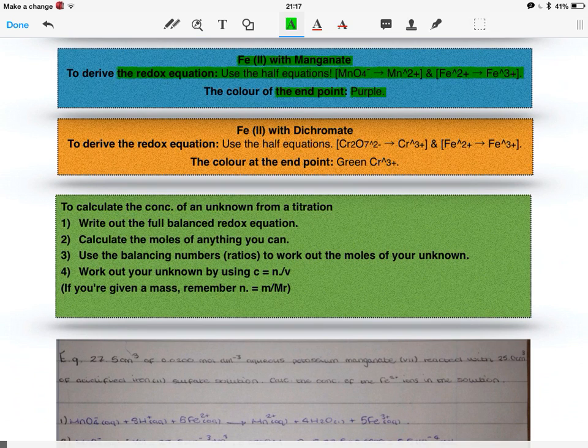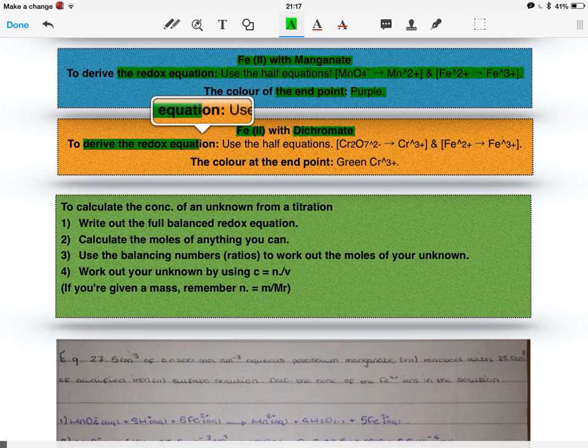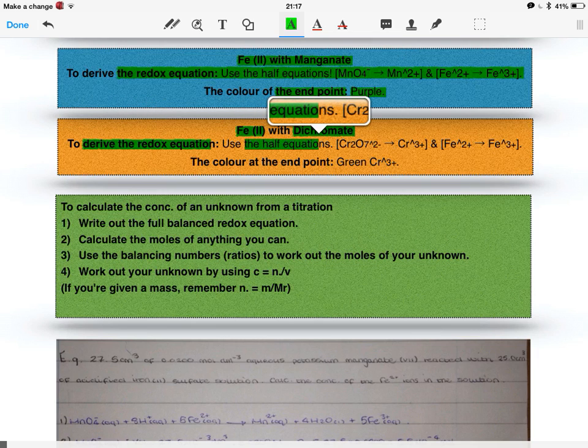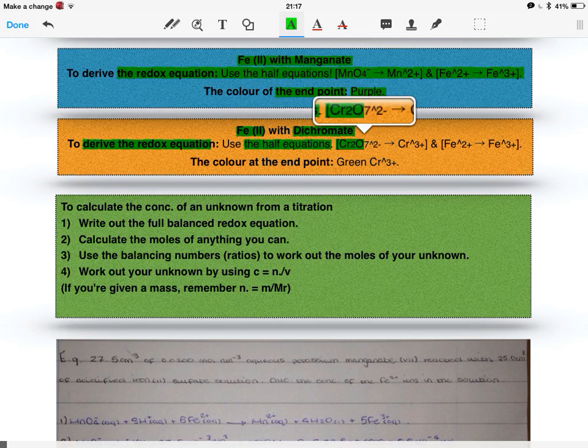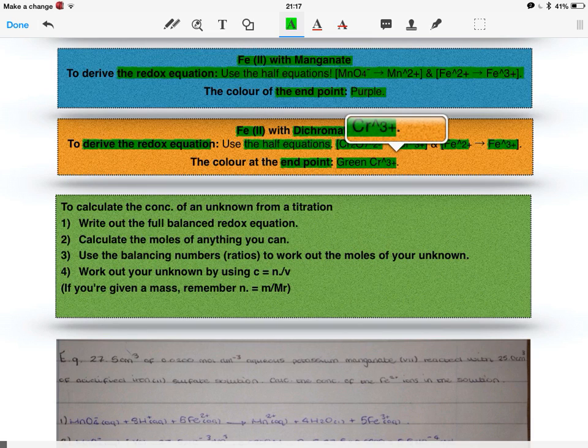We have the reaction of iron 2 plus with dichromate. To derive the redox equation for this, again, we use the half equations, and we just have to derive the half equations from dichromate into chromium 3 plus, as well as iron 2 plus into iron 3 plus. The colour of the end point of this reaction is the green chromium 3 plus.